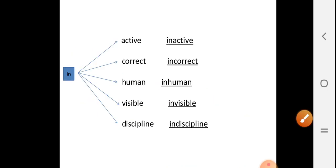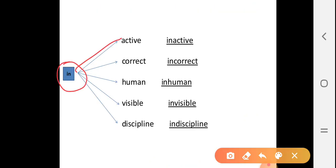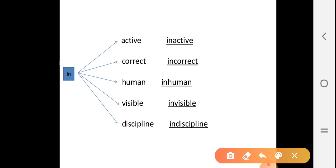Very good. Now let's go to prefix 'in'. In this question also, we have to join 'in' to the main words to get the answer. First one, 'active'. After joining 'in' to 'active', we get the answer: inactive.